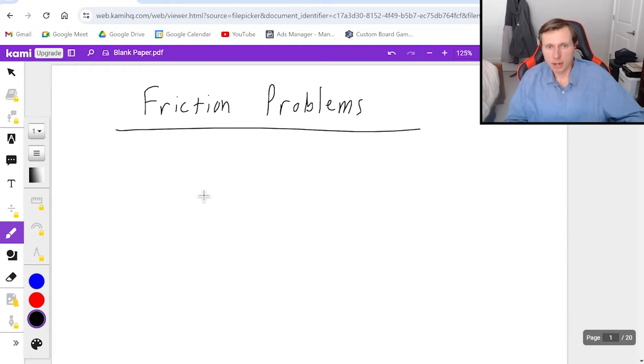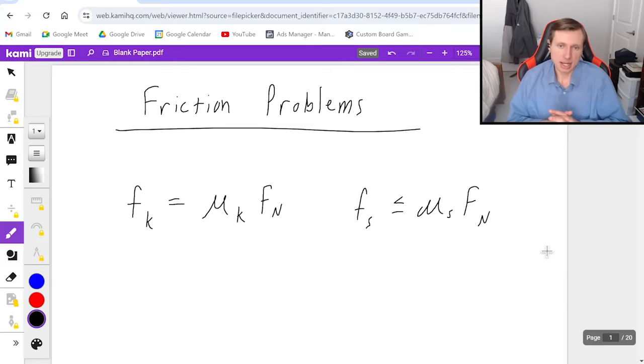So I'll just tell you these problems are going to involve kinetic friction, which is Fk, and the equation is Fk equals mu k times the normal force. I could have also asked static friction. If I asked for static friction, the equation is Fs is less than or equal to mu s times the normal force, and that comes into play whenever our object is not moving.